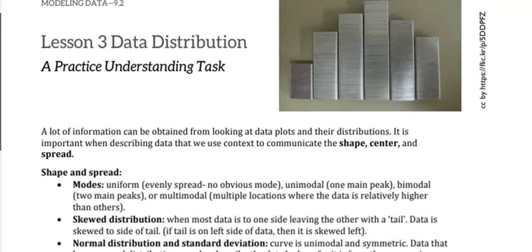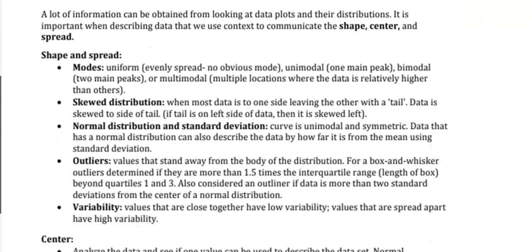With the shape and the spread it starts off with explaining about modes. So remember mode is the number that appears most often. If your data is evenly spread out then it's considered uniform. It has one peak, so if you're looking at the histogram and it has one peak it's unimodal. Bimodal has two peaks or multimodal has multiple locations where the data is relatively higher.